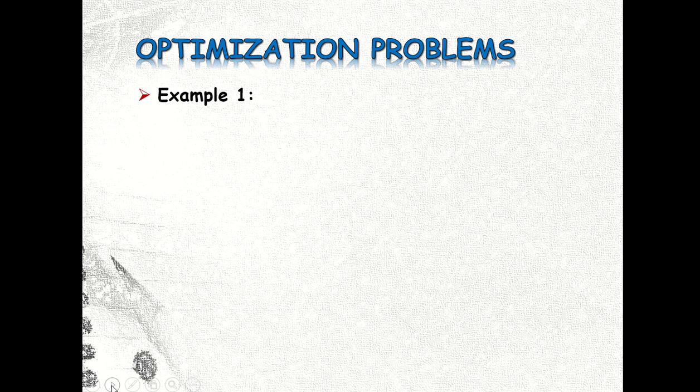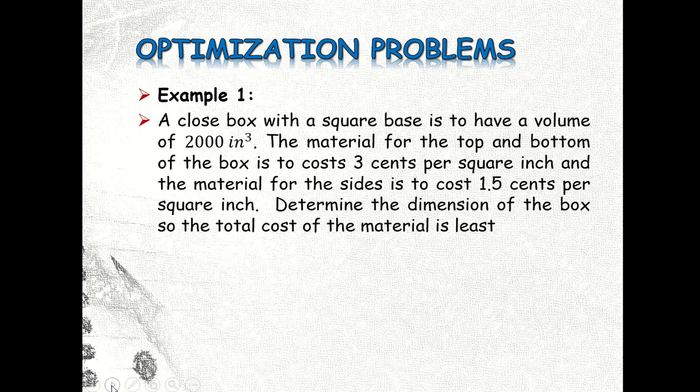Now we have here an example. I will solve only one example class, I will leave to you the rest of the exercises. We have here the first example: A closed box with a square base is to have a volume of 2000 cubic inches. The material for the top and bottom of the box is to cost 3 cents per square inch, and the material for the sides is to cost 1.5 cents per square inch. We are asked to determine the dimension of the box so that the total cost of the material is least.